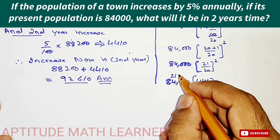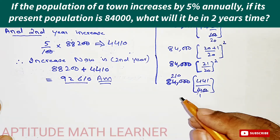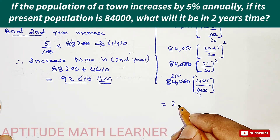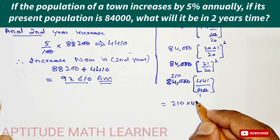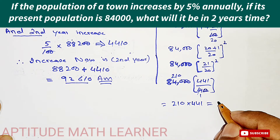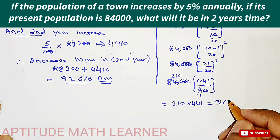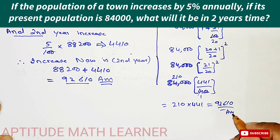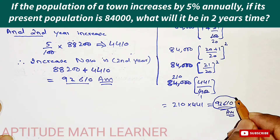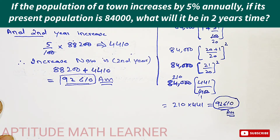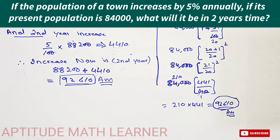210 multiplied by 441 gives us 92,610. This is our answer, and it is the same as what we found using the first method. Whichever method you find simpler, you can use. Thank you very much.